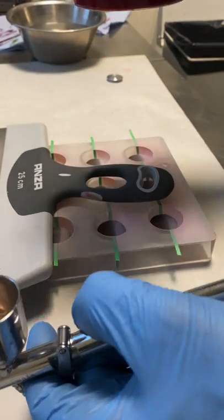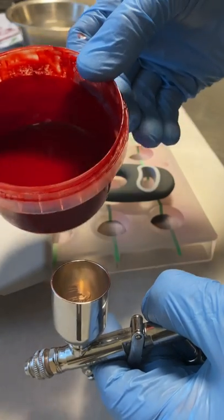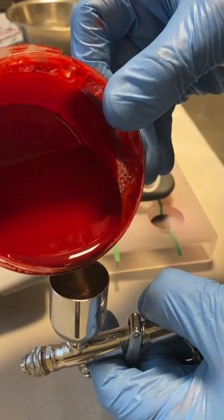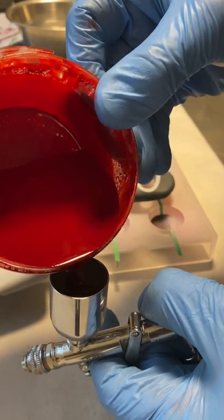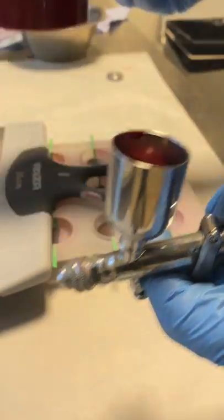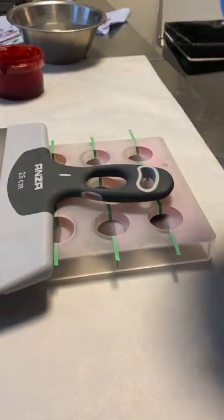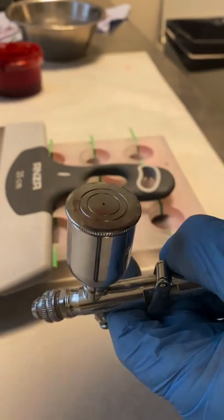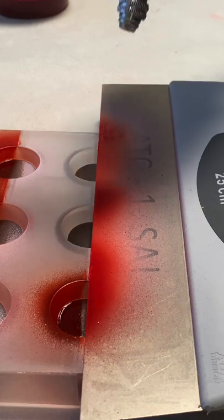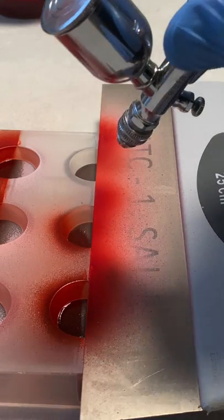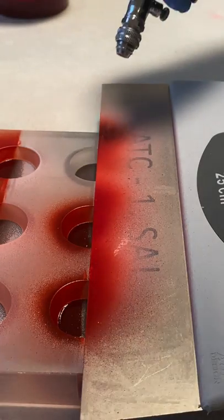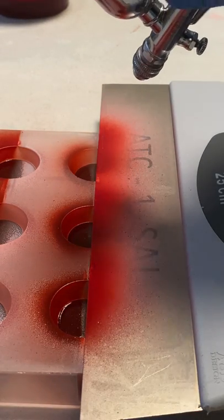Now it's time for the red tempered cocoa butter. I cleaned the gun a little bit. It doesn't matter if there is still a little bit of pink cocoa butter left, just start spraying when it starts to get red. You can spray in the cavities. Remember to cover the cavities half with a scraper and start spraying nice and even.